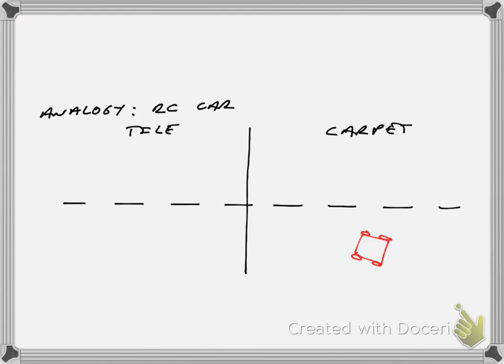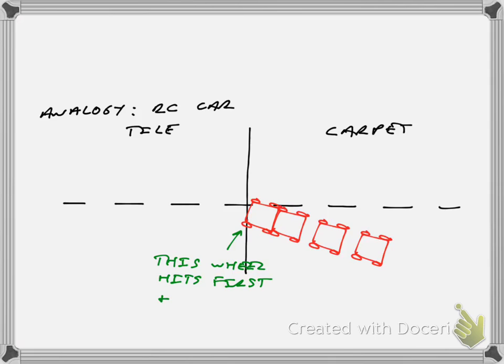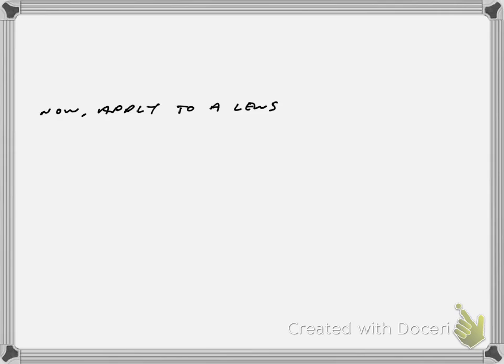Similarly, if we go from carpet to tile, the front left wheel hits first and speeds up, because the car goes faster on tile than on carpet. That causes it to turn to the right, so when going from a slower medium to a faster medium, the wave bends away from the normal line. We can take advantage of this property when making something like a lens, so let's apply it to a lens.